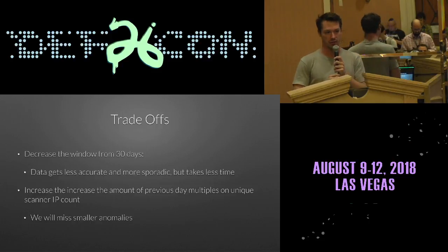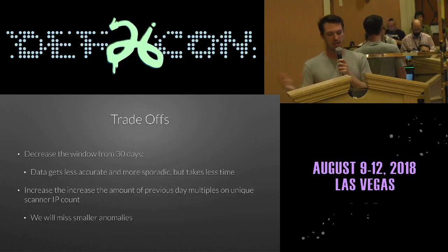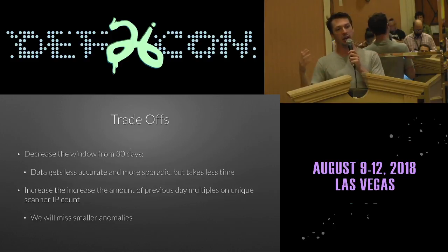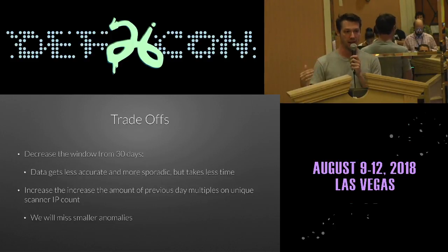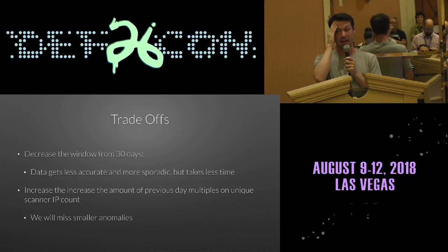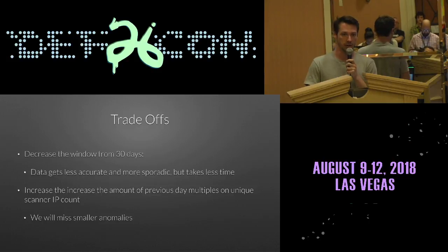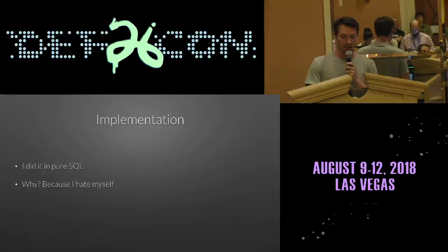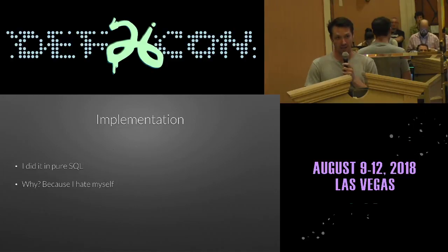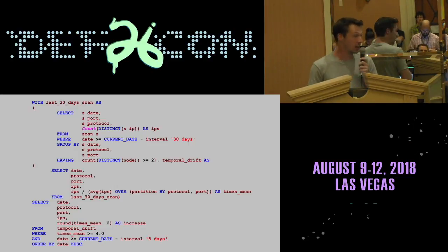There are statistical trade-offs: if you decrease the window from 30 days to a week, you'll get a measure of the anomaly faster, but it's going to be less accurate — more chaotic, sporadic, and volatile. If you increase the number of IPs you need to see above or below a certain threshold, you're going to miss some of the smaller anomalies. So how did I actually do it? In SQL — which is the literal worst possible way — because I hate myself, and it looks like this.